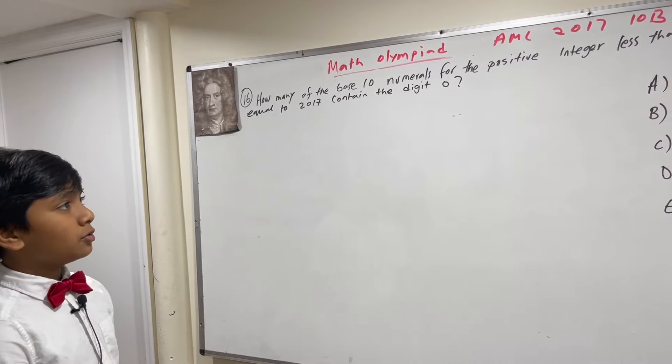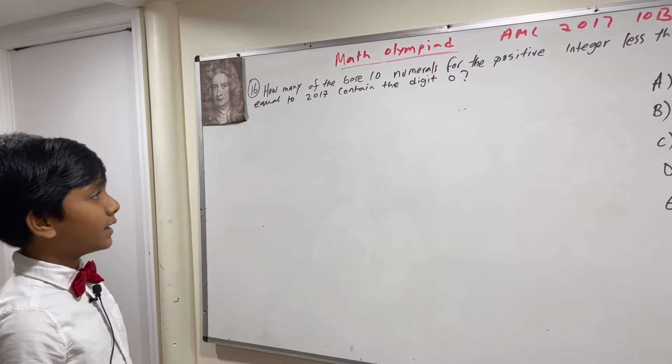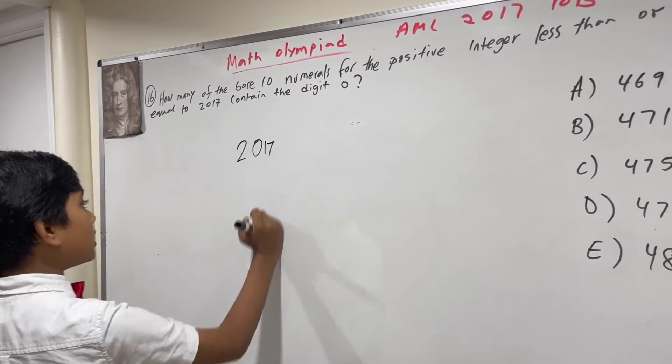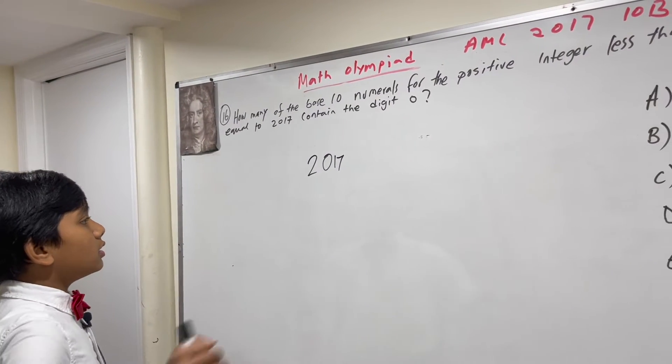How many of the base 10 numerals for the positive integer less than or equal to 2017 contain the digit 0? So, there are 2017 positive integers less than or equal to 2017.